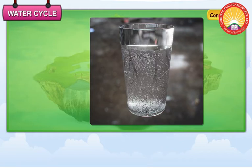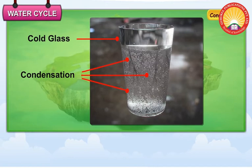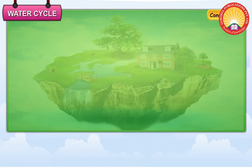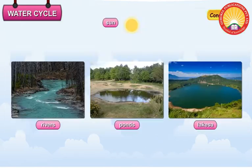Condensation: When water vapour cools, it changes back to drops of water. This is called condensation. The presence of water droplets on the lid of a cooking vessel while cooking is an example of condensation.